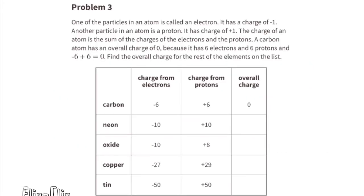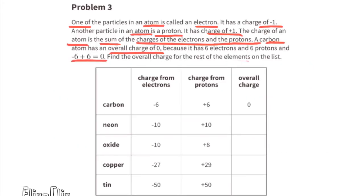Problem number three: One of the particles in an atom is called an electron — it has a charge of negative 1. Another particle is a proton, with a charge of positive 1. The charge of an atom is the sum of the charges of the electrons and the protons. A carbon atom has an overall charge of 0 because it has 6 electrons and 6 protons: negative 6 plus 6 equals 0. Find the overall charge for the rest of the elements.